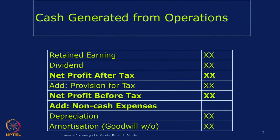If you remember, in the cash flow statement there are 3 sections. One is cash flows from operations, second is cash flows from investing activities, and third is cash flows from financing activity.